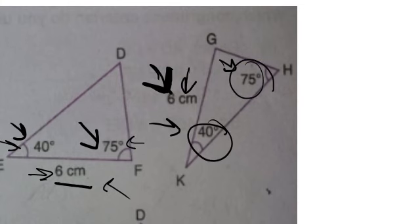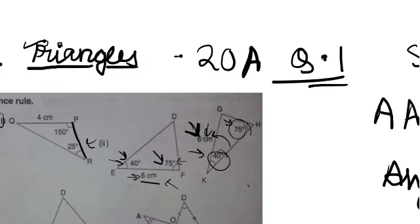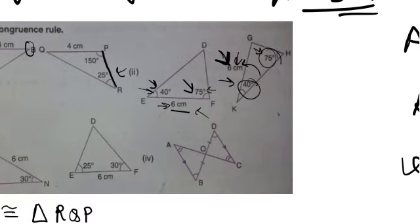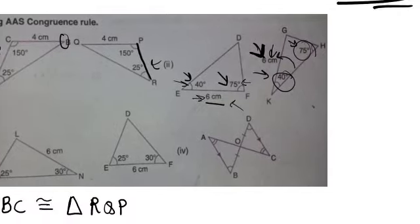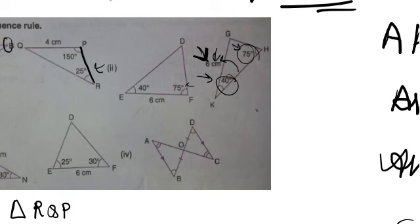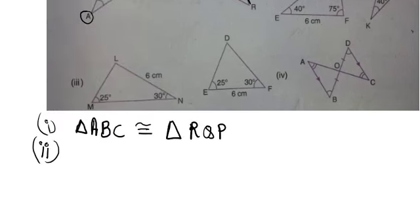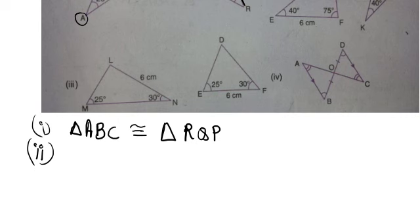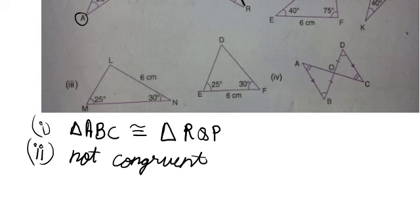In the second triangle, this six centimeter side is not between 40 and 75 degrees — it is opposite to them. In the AAS method, the side given should be opposite to the two angles. Since the side given in the first triangle is not opposite but between the angles, this is not AAS. Therefore, we cannot prove the sides are equal, and these triangles are not congruent.